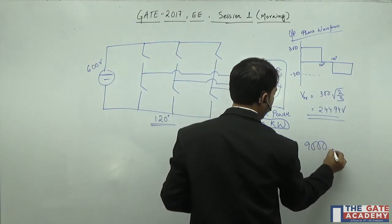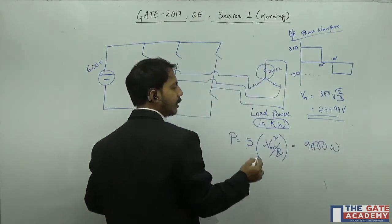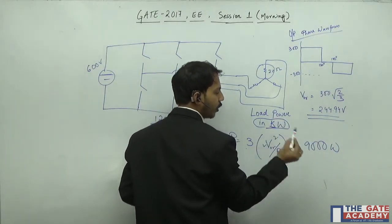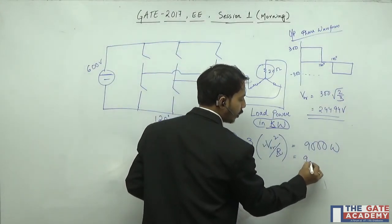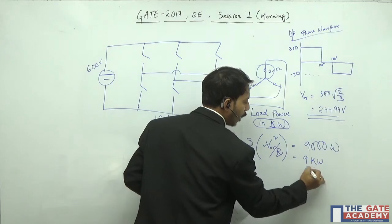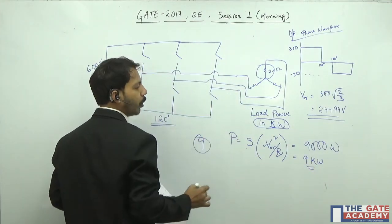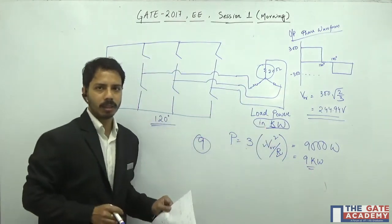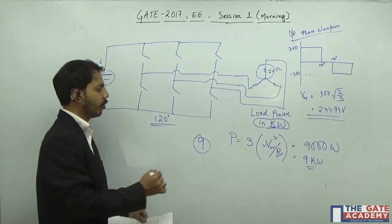Now you see the answer we should give in kilowatt, so we have to give the answer as 9 kilowatt. So the answer will be 9. If we put the answer as 9000 it will be wrong. So the answer will be 9.